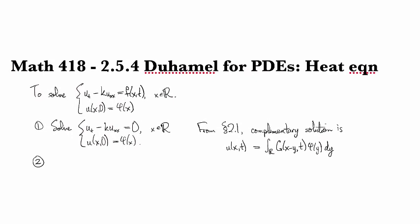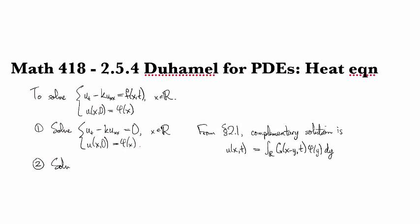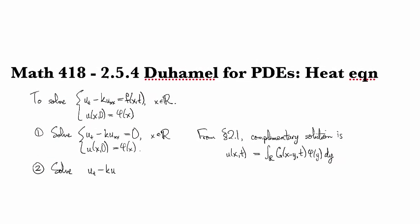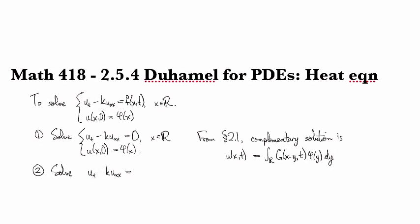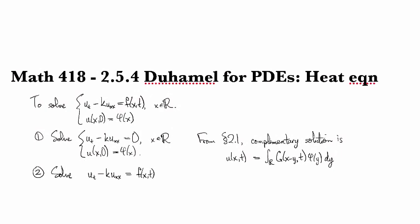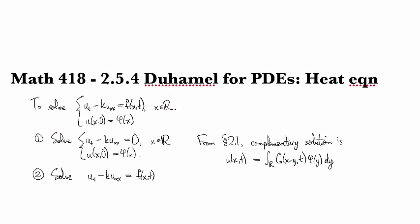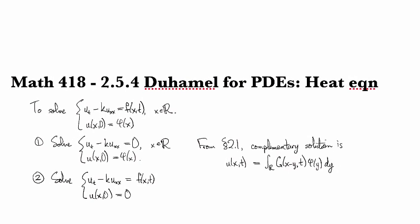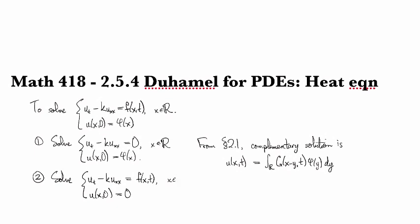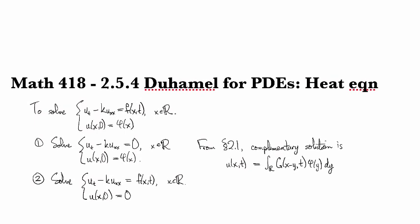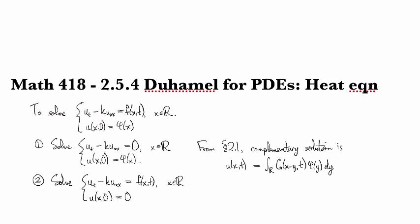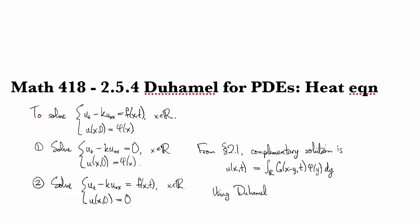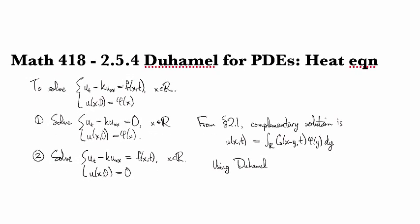so then step two will be to solve the non-homogeneous equation with homogeneous boundary conditions. So, this time we have a forcing function f(x,t), but we take the boundary conditions to be homogeneous. Okay, so then,